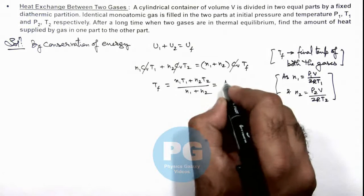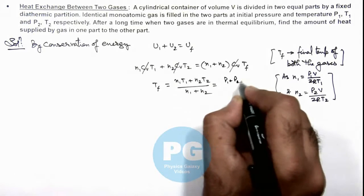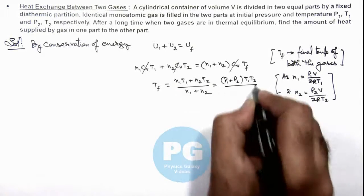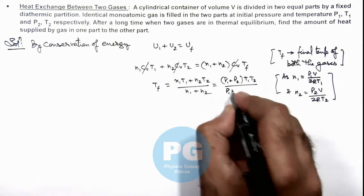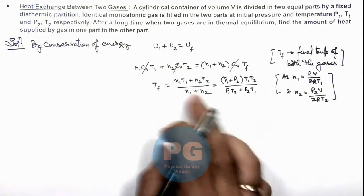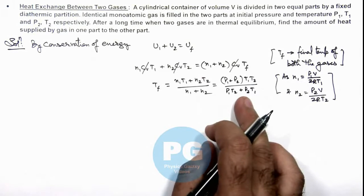simplifying this gives us T_f = (P₁ + P₂)T₁T₂/(P₁T₂ + P₂T₁). So if this is the final temperature of the two gases, we can calculate directly the heat supplied.